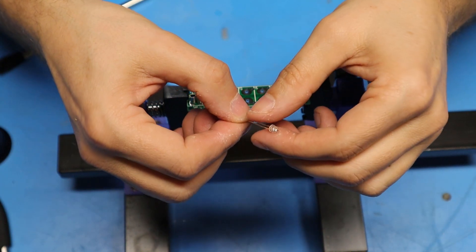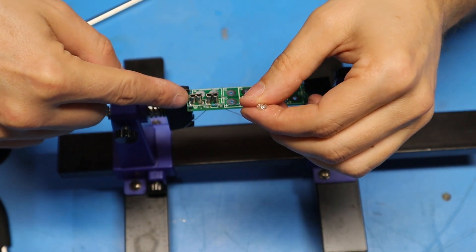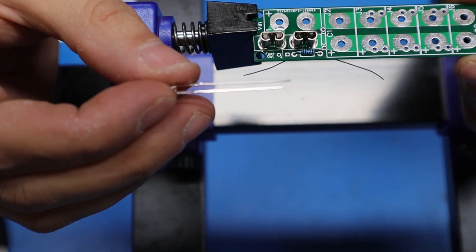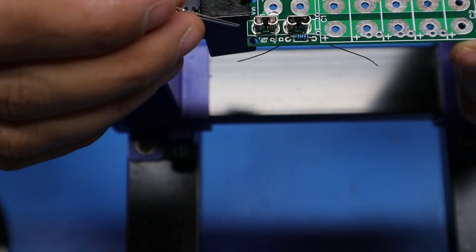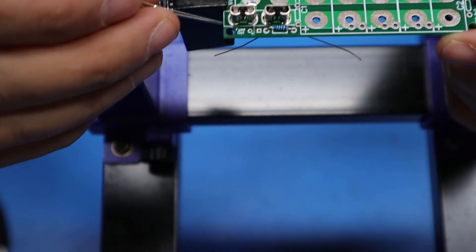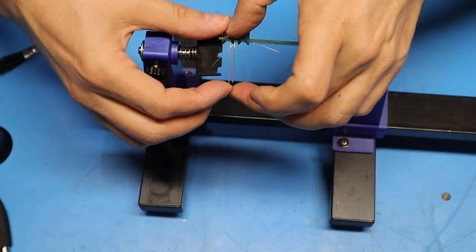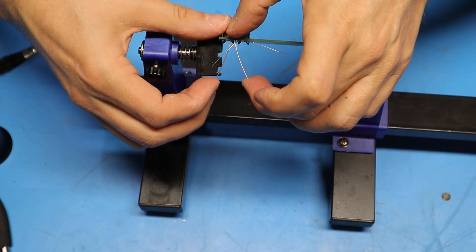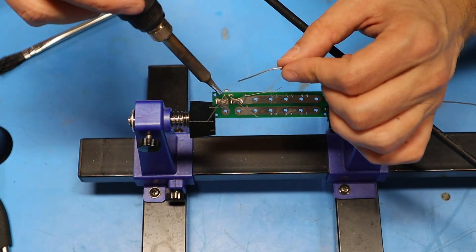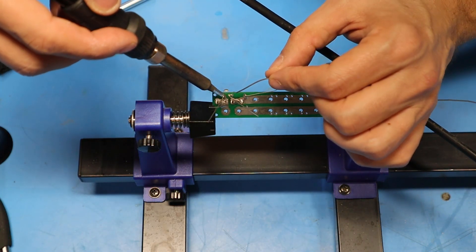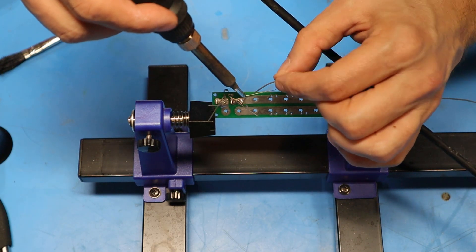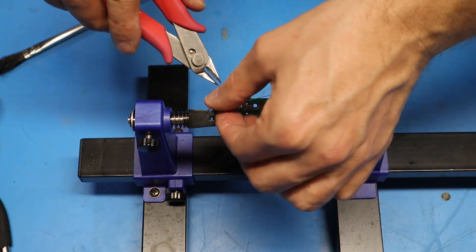Next up I'm going to install the LED so that the longer of the two leads goes through the plated through hole with the positive marking, which is towards the end of the board. Just like with the resistor, I'm going to bend the leads out slightly so the part can't fall out. Now I'll trim the excess leads.